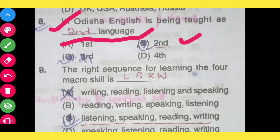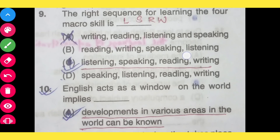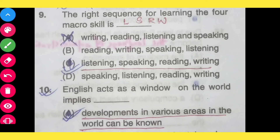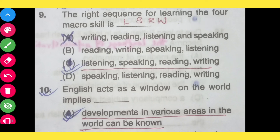Question number 9: The right sequence for learning the four macro skills is: option A, writing, reading, listening and speaking; option B, reading, writing, speaking, listening; option C, listening, speaking, reading, writing; option D, speaking, listening, reading, writing. The correct answer is listening, speaking, reading and writing — LSRW.